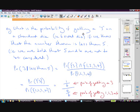What's the probability of getting a three on a standard die, that's a six sided die, if we know that the number thrown is less than five.